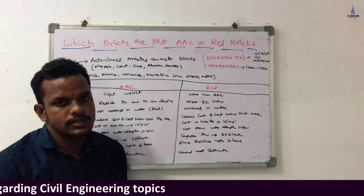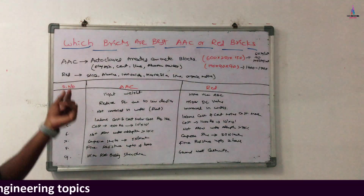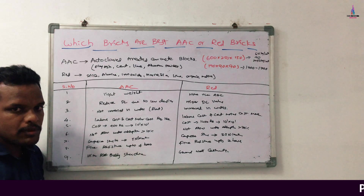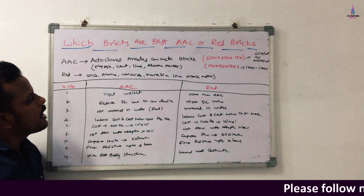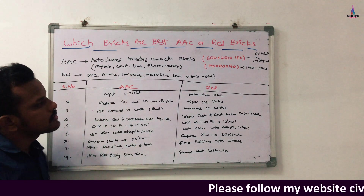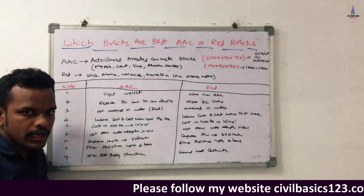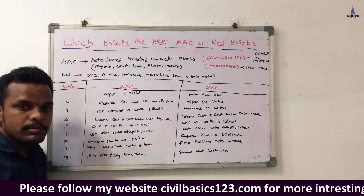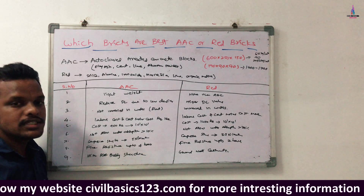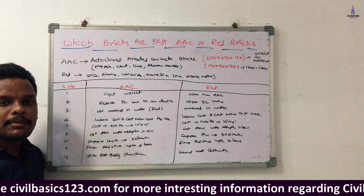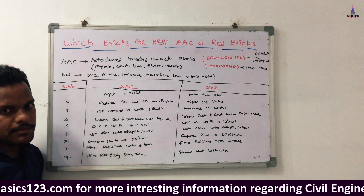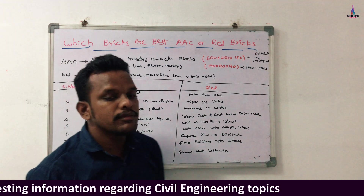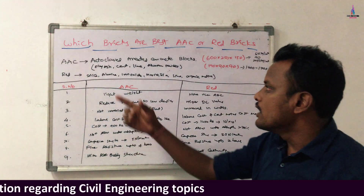The second type is red brick blocks. The composition of red brick blocks consists of silica, aluminium, iron oxide, magnesia, lime, and organic matter. The standard size of a red brick block is 190 mm x 90 mm x 90 mm.